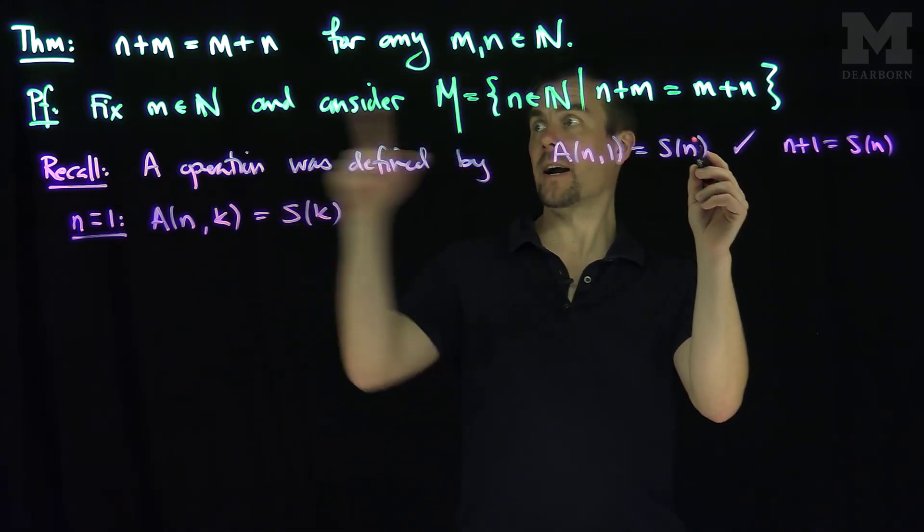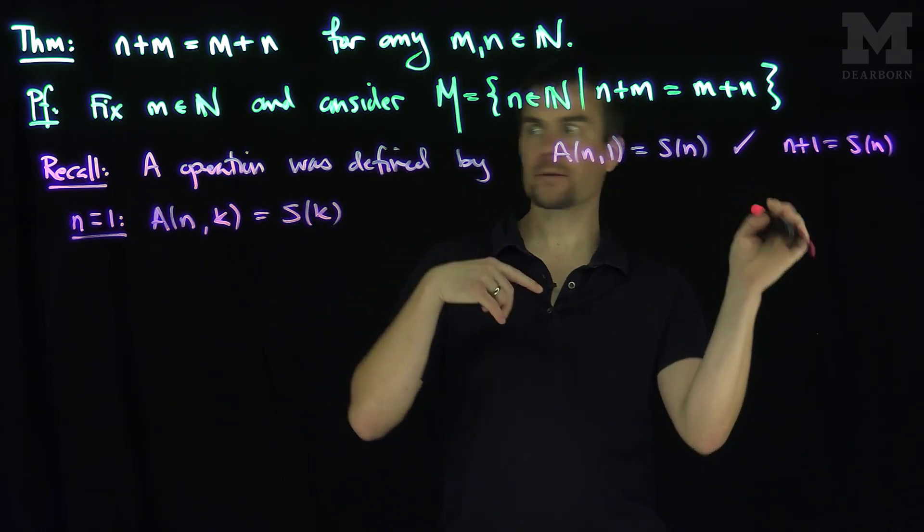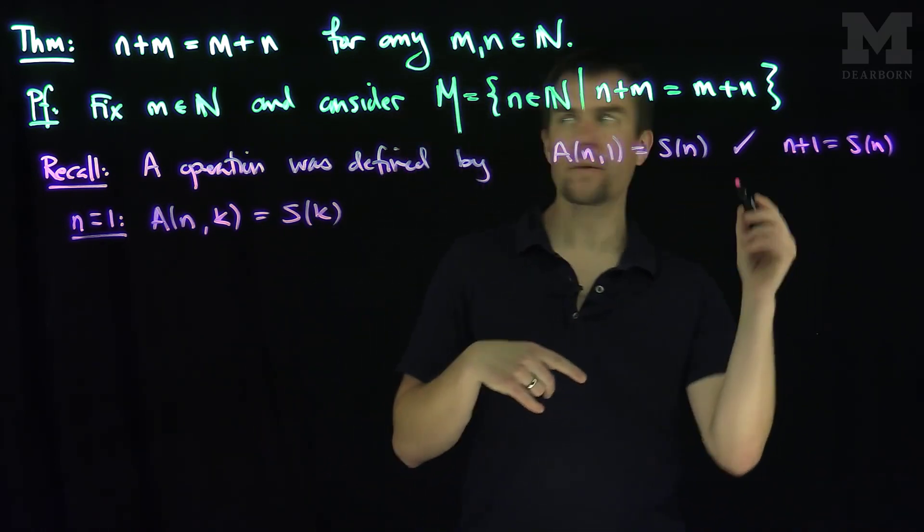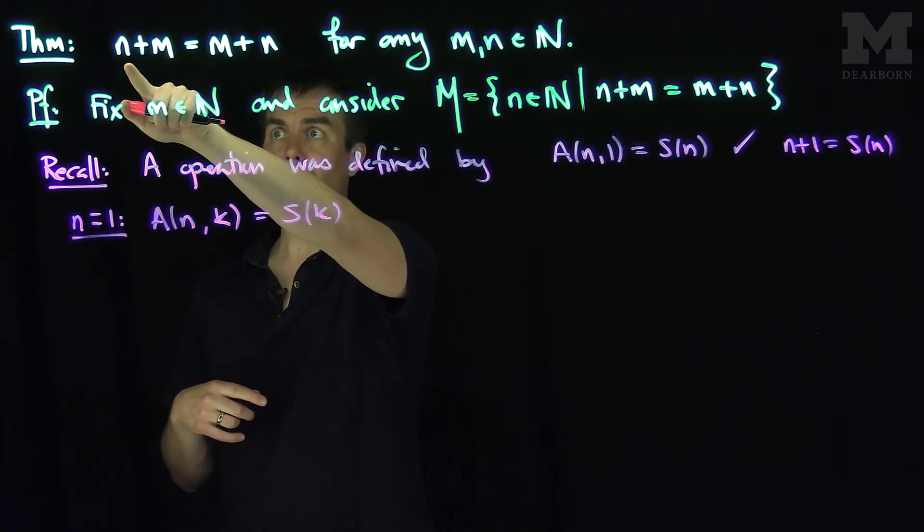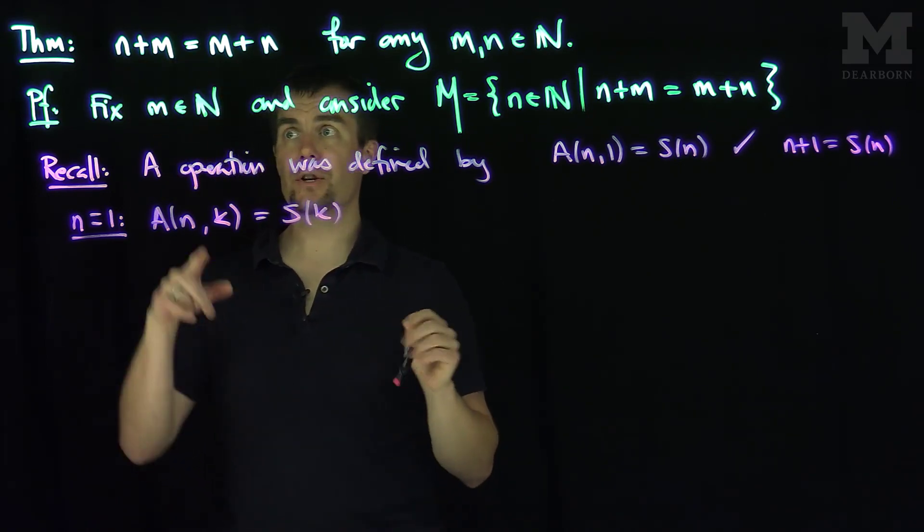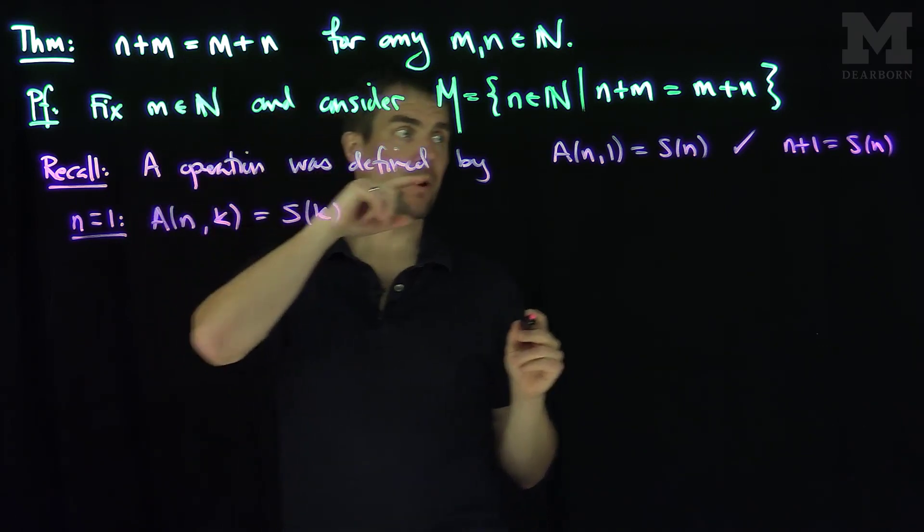So this is always true. And so next, to prove this result for n equals 1, what would I need to show? I would need to show that 1 plus m is equal to m plus 1.